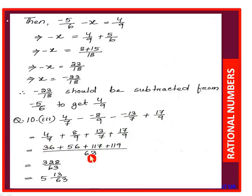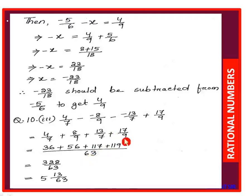LCM of 7 and 9 is 63. 63 divided by 7 = 9; 9 into 4 = 36. Plus: 63 divided by 9 = 7; 7 into 8 = 56. Plus: 9 into 13 = 117. Plus: 7 into 17 = 119. Adding all: 36 + 56 + 117 + 119 = 328 by 63. Converting to mixed fraction gives 5 whole 13/63.